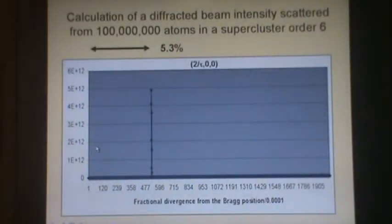Here is an example, a typical example of a diffracted beam calculated as the scattering from 100 million atoms in a supercluster order six. And the quasi-Bragg angle differs from the Bragg angle that appears in crystals in classical crystallography. It differs by about 5% because of those moduli that we calculated before.